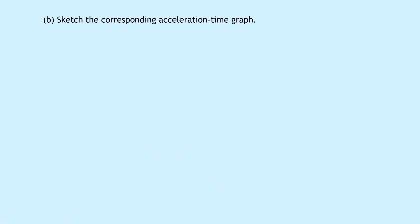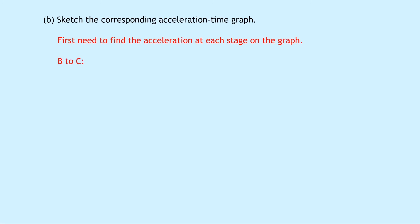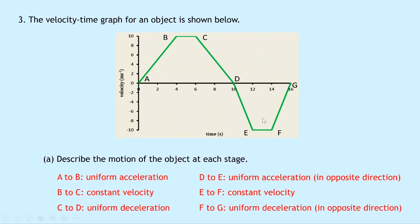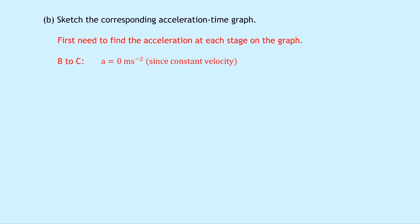Part B says to sketch the corresponding acceleration time graph. Just like in question 2, we first need to find the acceleration at each stage — there are 6 accelerations because there are 6 different parts on our velocity time graph. B to C was a constant velocity, and so was E to F, so both have acceleration of 0 metres per second squared. If they are a constant velocity they cannot be accelerating, so they must have 0 acceleration.